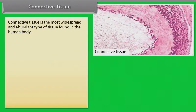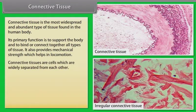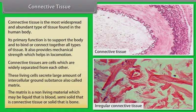Connective tissue is the most widespread and abundant type of tissue found in the human body. Its primary function is to support the body and to bind or connect together all types of tissues. It also provides mechanical strength which helps in locomotion. Connective tissue cells are widely separated from each other and secrete large amounts of intercellular ground substance, also called matrix. The matrix is a non-living material which may be liquid (blood), semi-solid (connective tissue), or solid (bone).